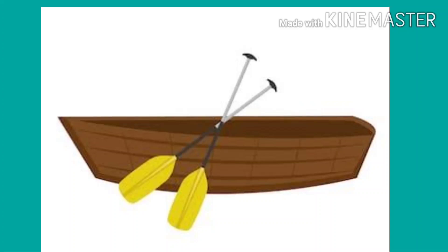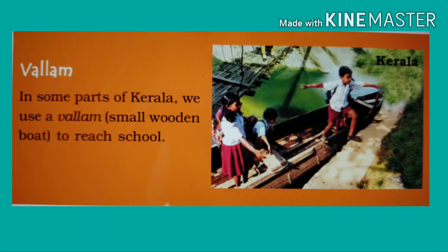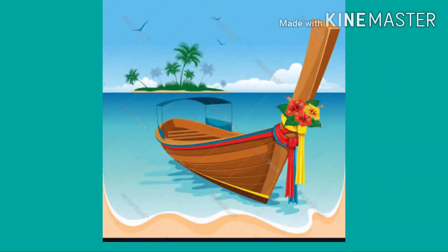Now let's know about the next topic: introduction of wallam. In some parts of Kerala, children use a wallam to reach school. Wallam is a small wooden boat. It is used to cross some small water bodies like a pond, lake, etc. It is very interesting to use it. Fishermen generally use it for fishing.